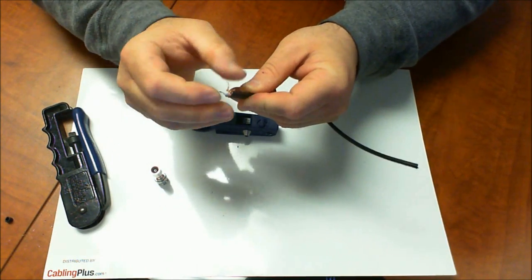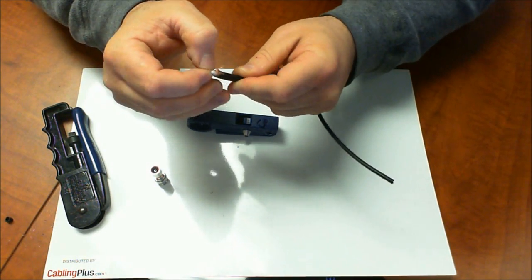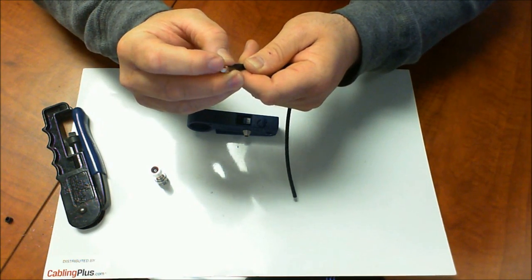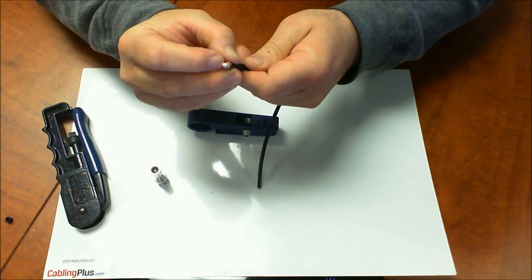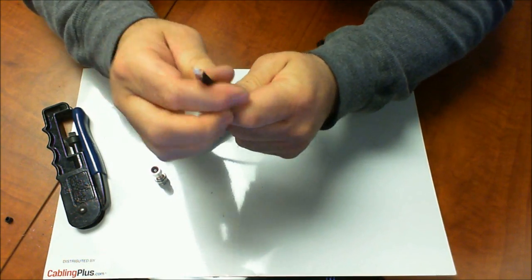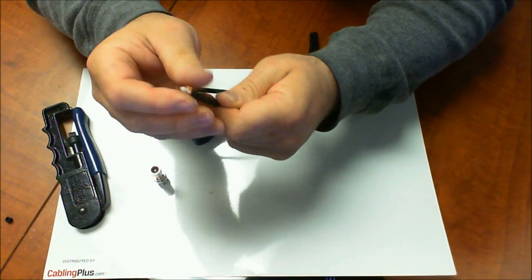If these hairs of the braid are touching that, it's going to short out the cable, so you've got to really make sure that's clean. Make sure that's all nice and clean. So there it is, it's all prepared. Just pull that braid back out of the way.